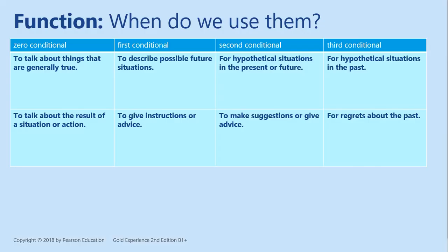Let's have a look at this beautiful table. We use zero conditional to talk about things that are generally true, to talk about the result of a situation or action. We use the first conditional to describe possible future situations and to give instructions or advice. We use second conditional in the present or future and to make suggestions or give advice — for example, 'If I were you, I would take notes.' And we use the third conditional for hypothetical situations in the past, for regrets about the past.